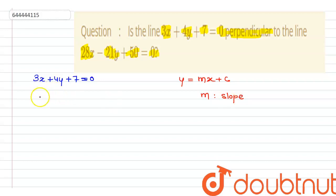So we can get: 4y = -3x - 7, and y = -3/4 x - 7/4. So from here we can say that m₁, the slope of the first line, is equal to -3/4.